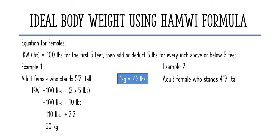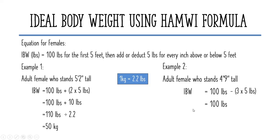Another example is an adult female who stands 4 feet and 9 inches tall. For females, the equation says deduct 5 pounds for every inch below 5 feet. Since this patient needs 3 inches to reach 5 feet, we multiply 3 inches by 5 pounds. 3 times 5 equals 15. So, 100 minus 15 pounds equals 85 pounds.